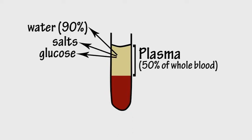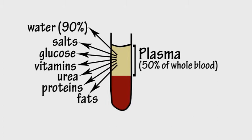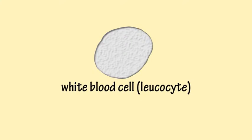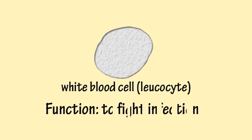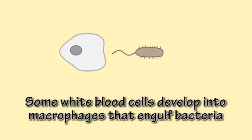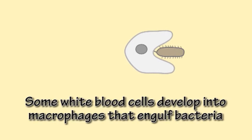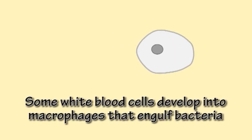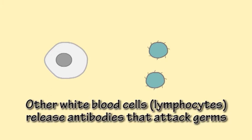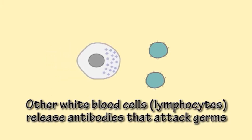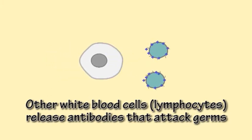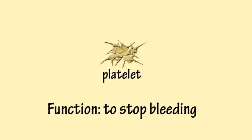Blood also contains white blood cells, or leukocytes, which help fight infection in the body. Some white blood cells can migrate out of the blood into surrounding tissues to devour bacteria and other foreign bodies, while other white blood cells called lymphocytes release antibodies that attack germs.